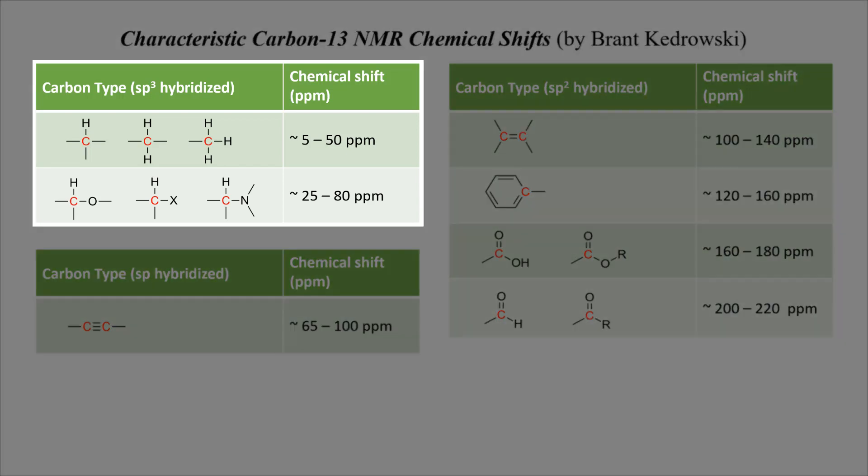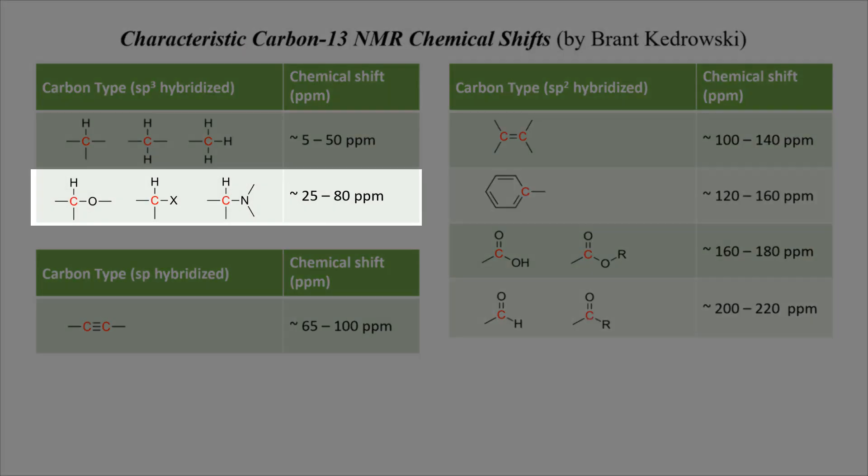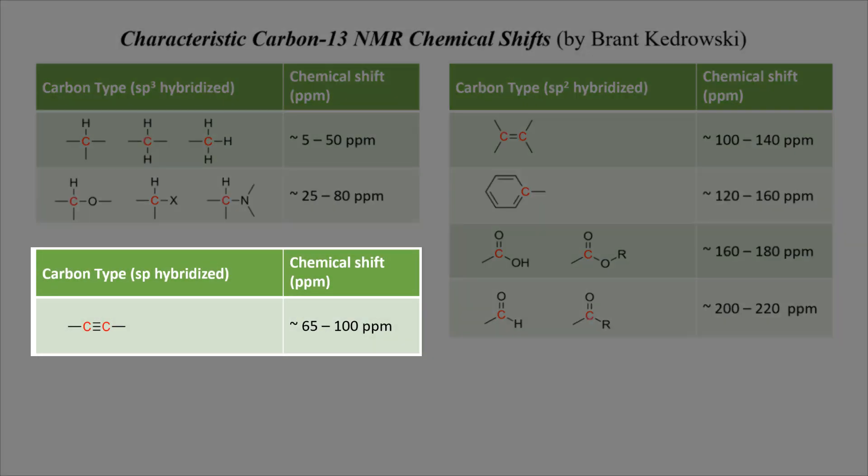The first group are the sp3 hybridized carbons, which tend to show up at the right side of the spectrum, the low chemical shift end of the spectrum. Carbons of alkyl groups that are far away from a deshielding group are 5 to 50 parts per million, while carbons that are directly attached to an electronegative element tend to be deshielded and pushed to higher chemical shifts at 25 to 80 parts per million. The carbons of triple bonds tend to show up at 65 to 100 parts per million. These are sp hybridized carbons.